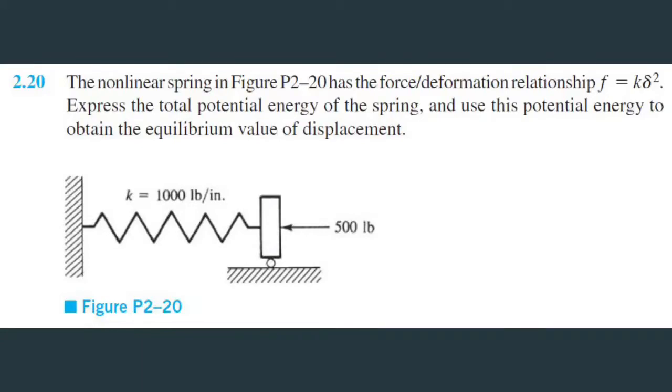Alright, so what's going on y'all? This one reads: the nonlinear spring has the force deformation relationship force equals k delta squared. We have to express the total potential energy of the spring and use this potential energy to obtain the equilibrium value of displacement. So let's go.